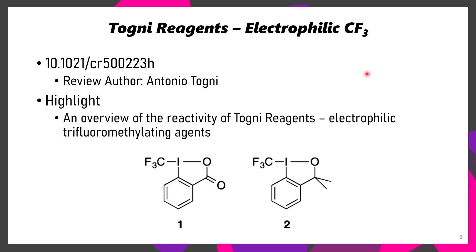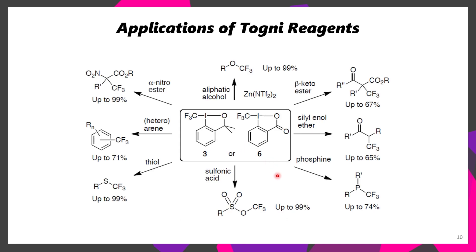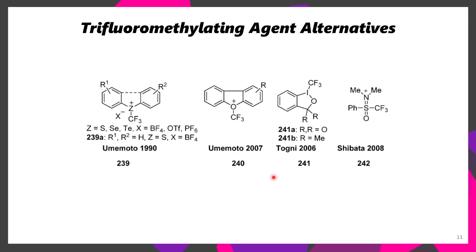The next paper for today is a review discussing the use of Togni reagents in organic synthesis. These are hypervalent iodine(III) reagents which have a tendency to react as electrophilic CF3 sources. These can react with a wide range of different functional groups, affording products which have CF3s in various different contexts. There are other alternative reagents, however, such as the Umemoto-type reagents, featuring a sulfur, selenium, tellurium, or even an oxygen. It's worth stressing that there are a lot more CF3 reagents than the ones discussed here, but these are some of the more commonly known ones.